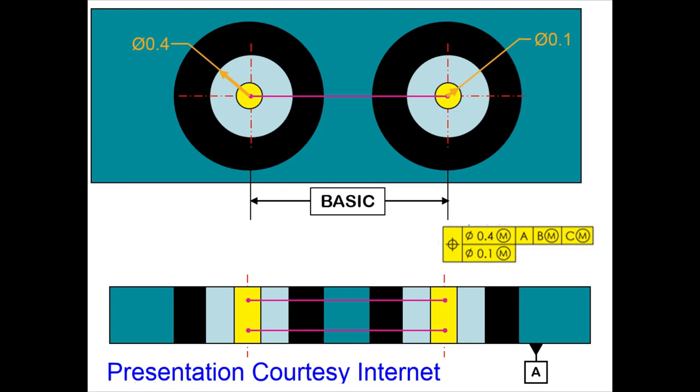If we have something like this, then the green color one is the actual part, with the black color one being the hole size, on which we have a blue color tolerance zone of 0.4mm in diameter.